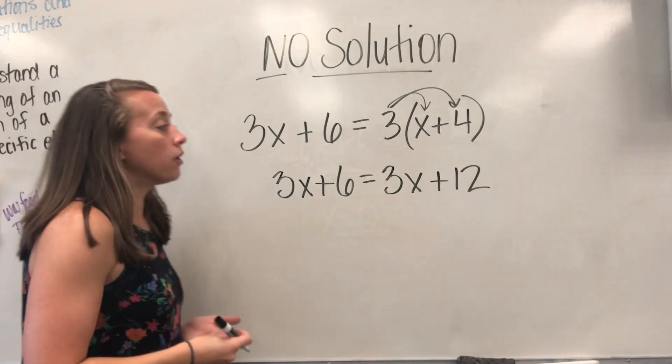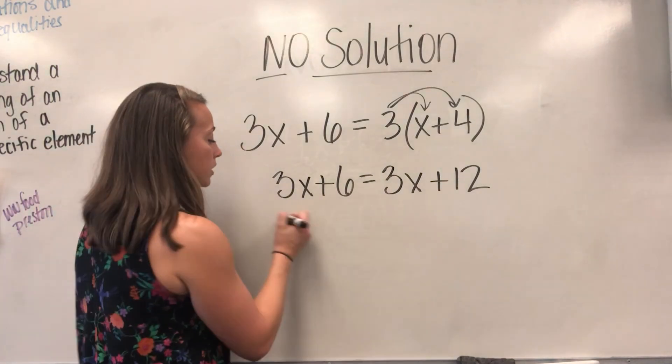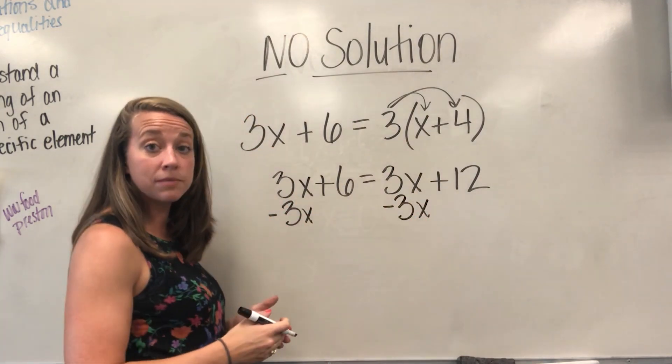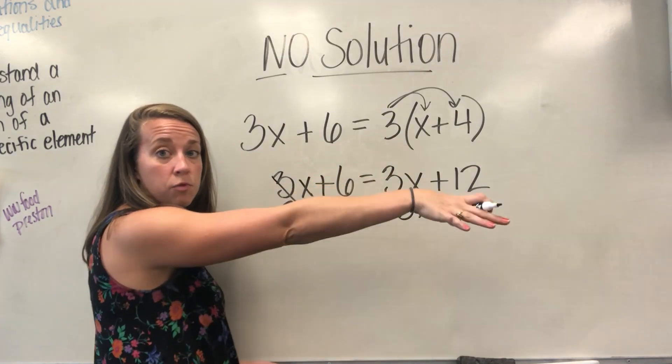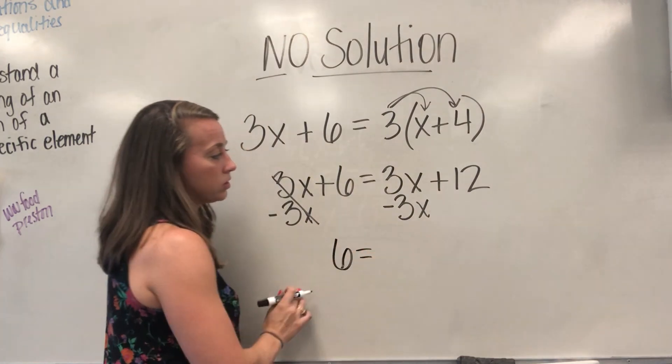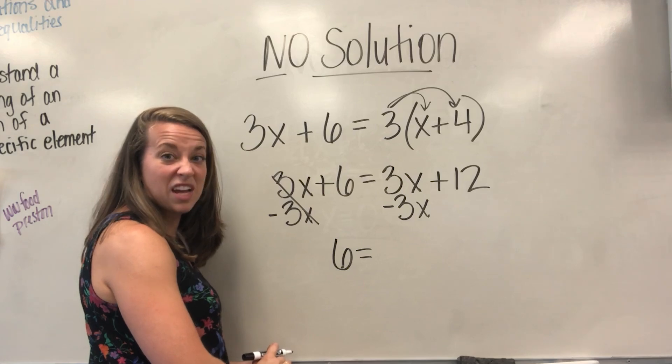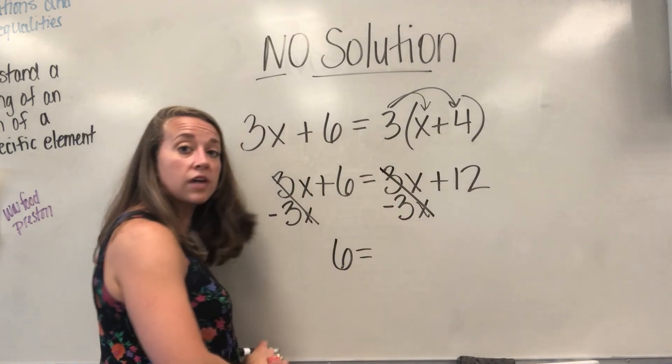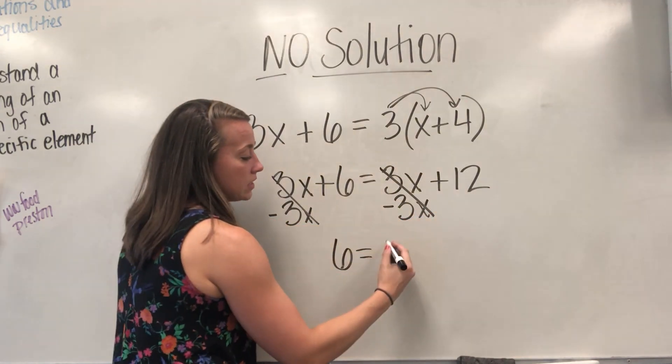Remember, your first step in any equation is to simplify the left and then simplify the right of the equal sign. I can't do anything on the left, so I'm going to leave it, and I'm going to distribute on the right. So 3 times X is giving me 3X, and 3 times 4 is going to give me 12. From here, I'm going to keep solving. Let's move this 3X over to the other side because my goal is to have all my X's on the same side. They cancel here. That was the whole point of moving them to the other side. So I'm left with 6 equals 3X minus 3X. That cancels out as well.